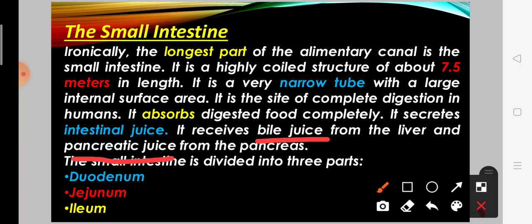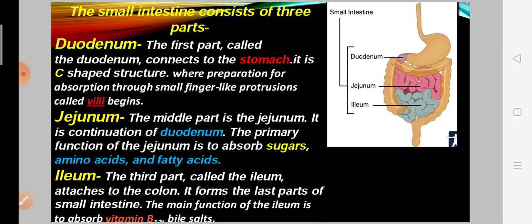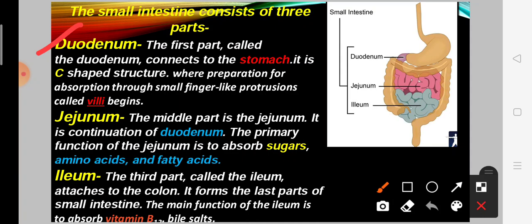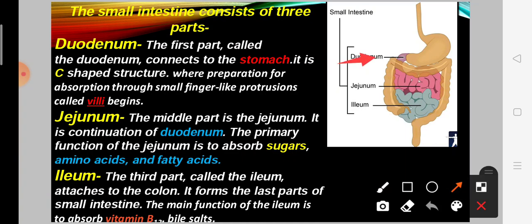The small intestine is divided into three parts. The first part is called the duodenum. The duodenum connects to the stomach.